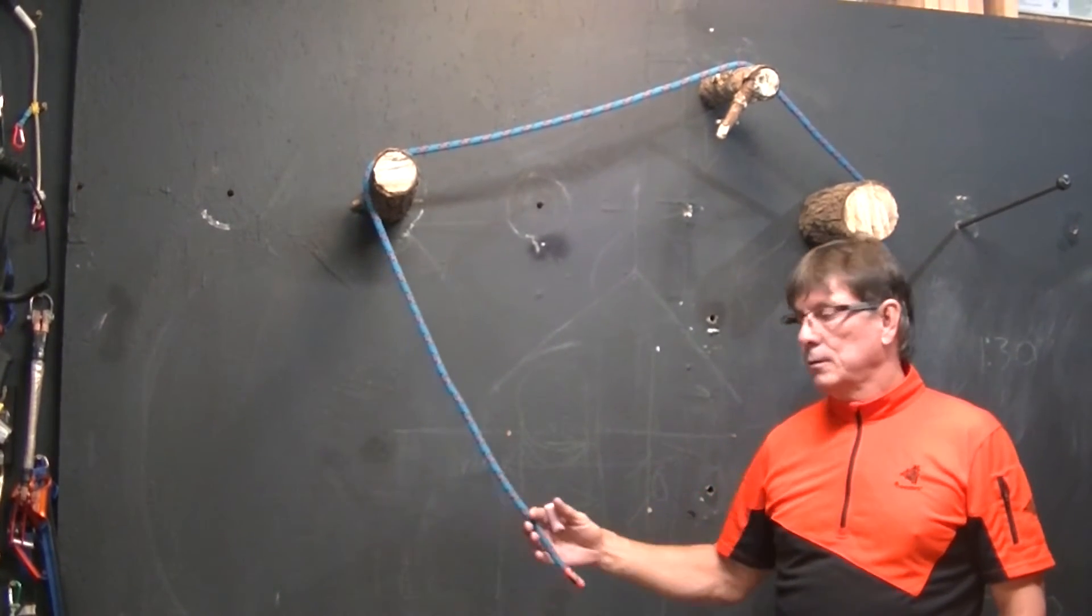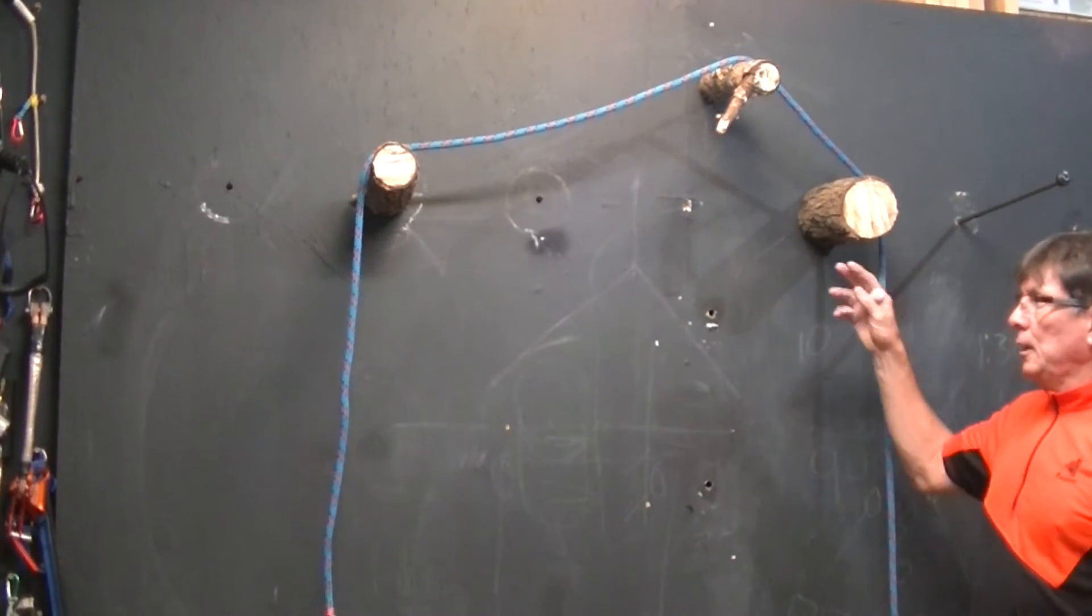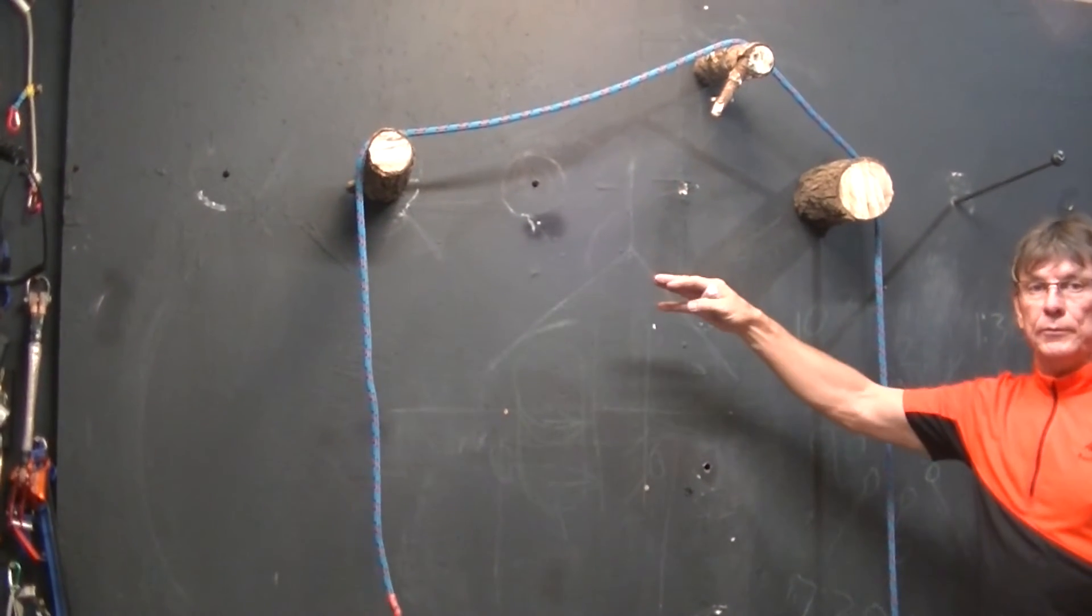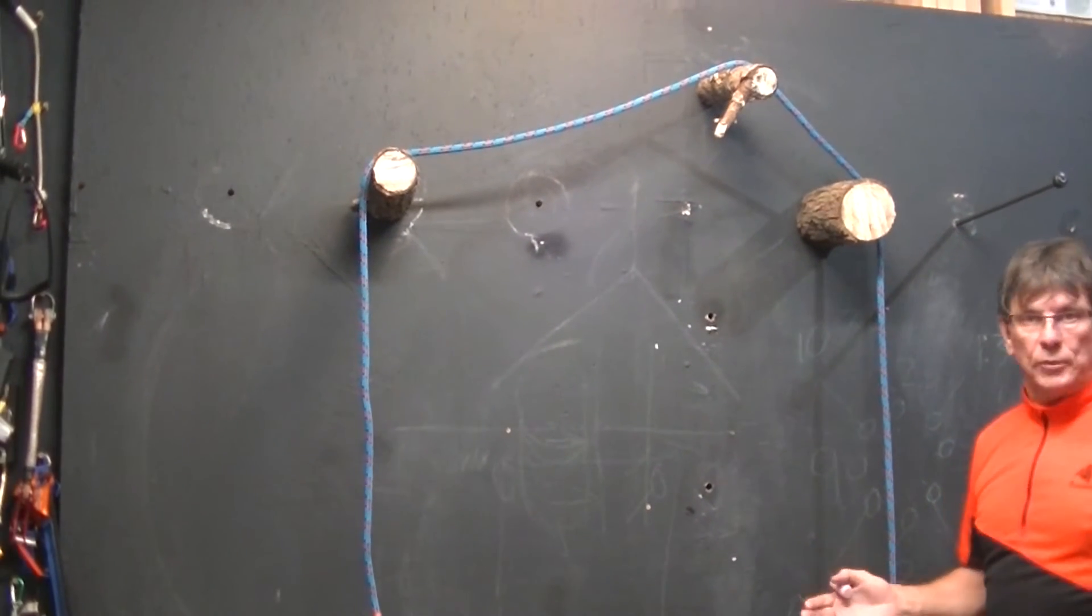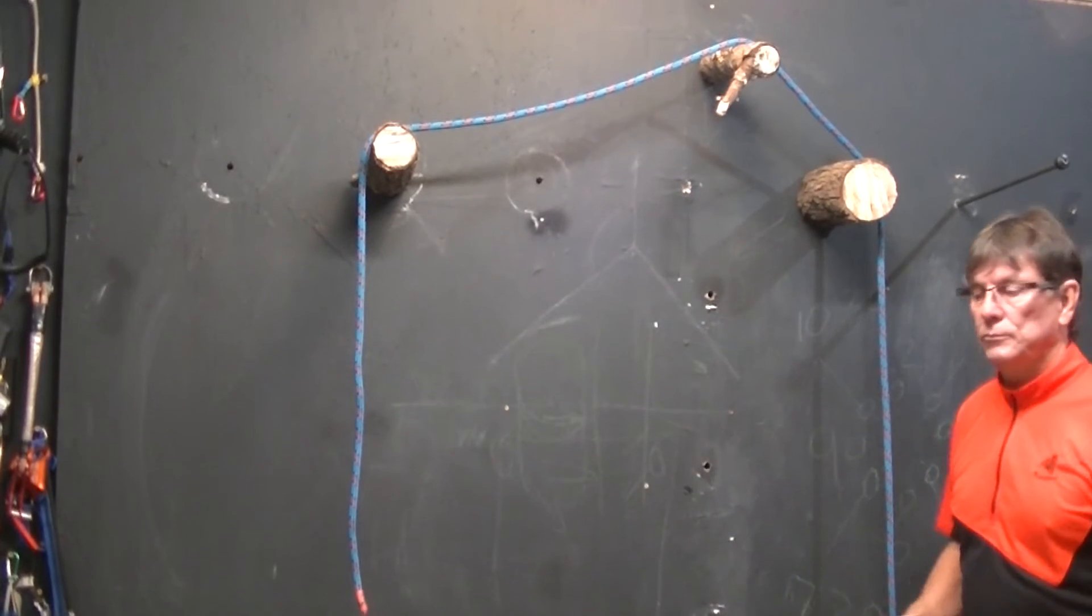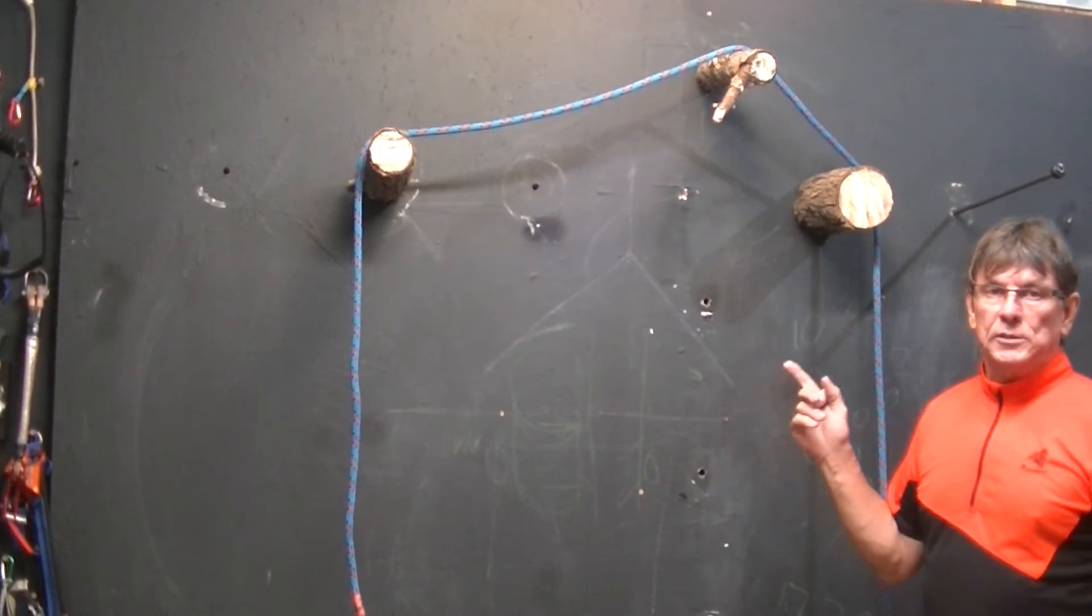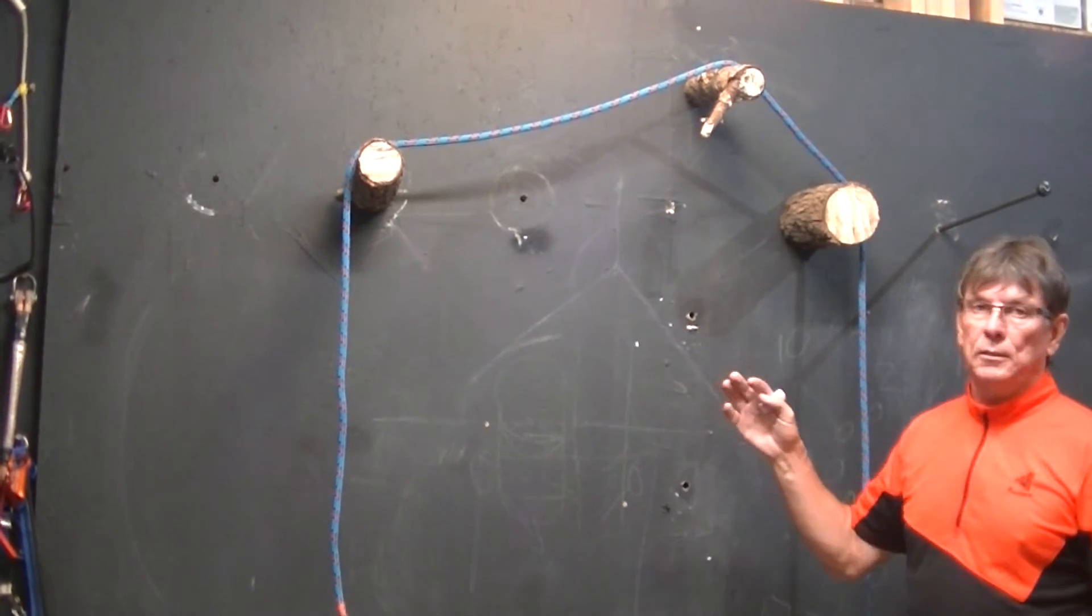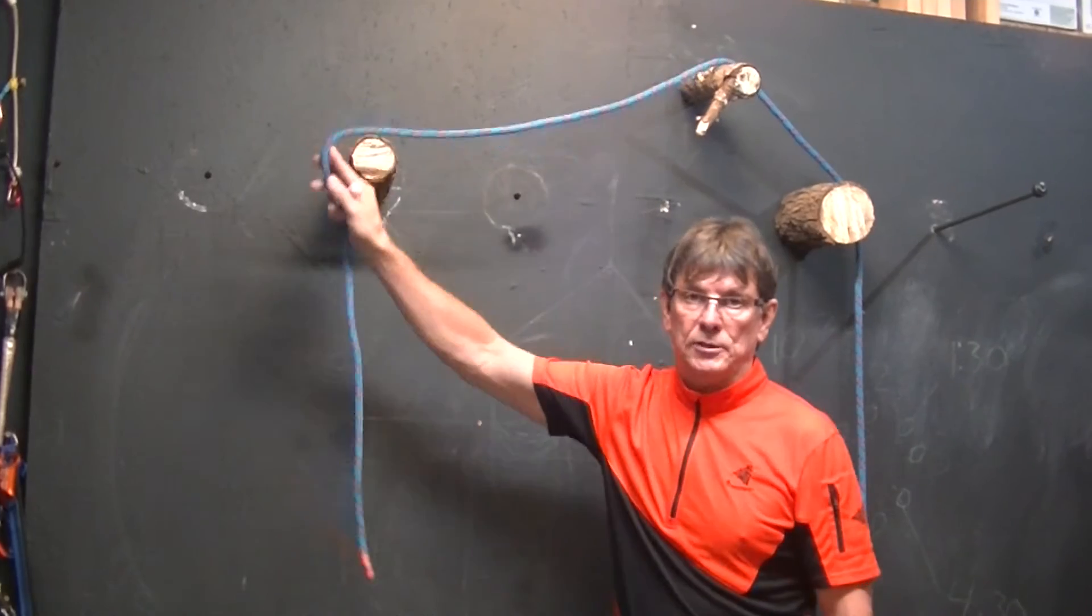If I take the 400 pounds that we had here and share it between three different anchors, then maybe it's 133 and a third pounds, right? Because you're sharing all those anchors. And what I want to point out is that it's important to understand sharing of anchors, because that's not 133 pounds on each one of those.